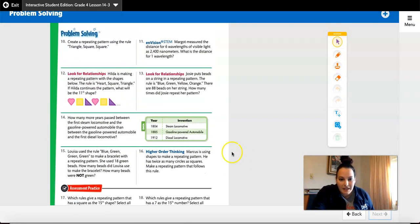Let's take a peek at the higher order thinking question. Marcus is using shapes to make a repeating pattern. He has twice as many circles as squares.